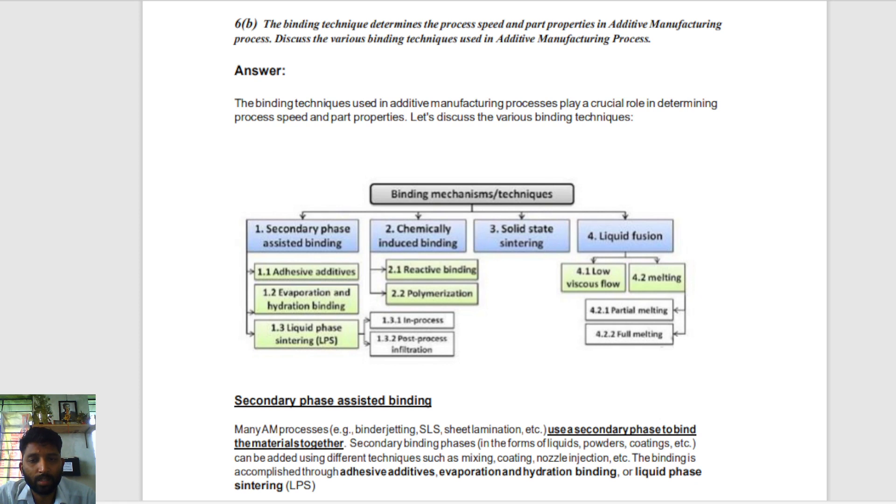We will look at what different techniques are there. Binding techniques used in additive manufacturing play a very crucial role, and that decides the speed and how the component will be manufactured. Here, binding techniques: secondary phase assisting binding is there, chemical induced binding is there, solid state sintering is there, and liquid fusion is there.